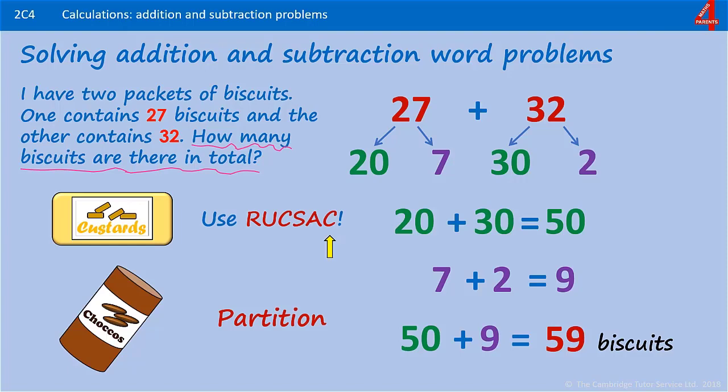And to check this, just make sure that 59 looks about right for 27 and 32.